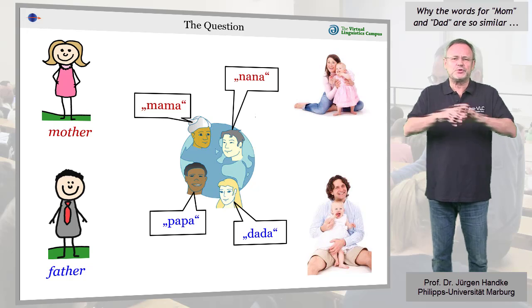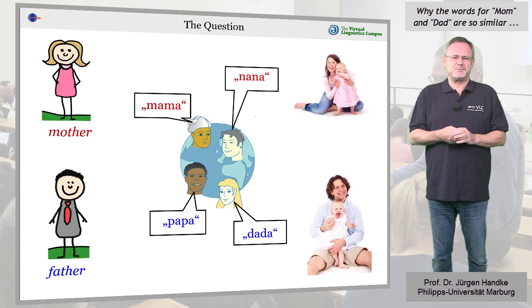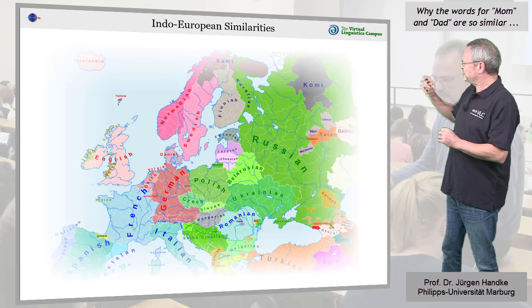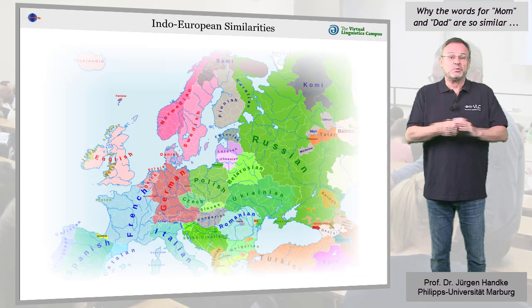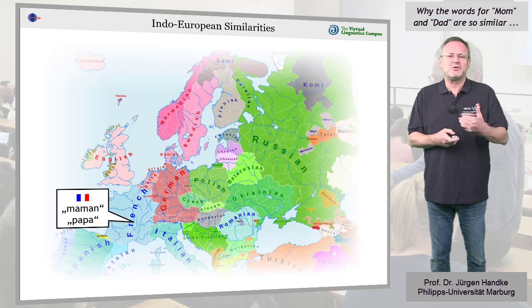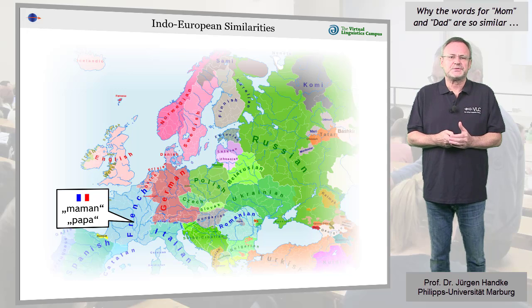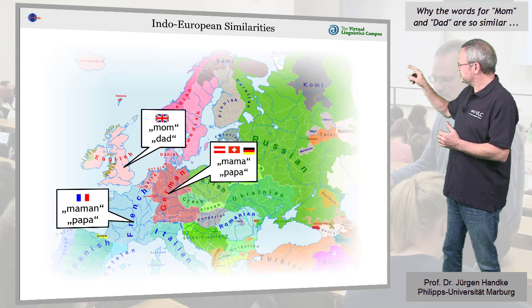In the Indo-European languages, we have forms such as mama or papa in French, similar forms in English and German, and even in the Celtic languages. For example, in Welsh we have forms such as mam and dad.